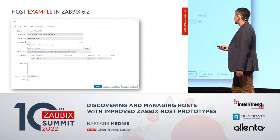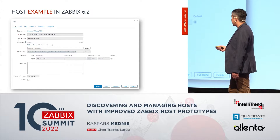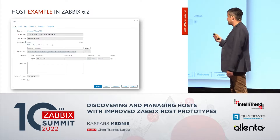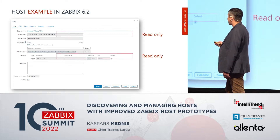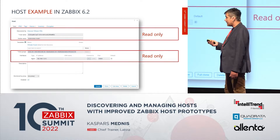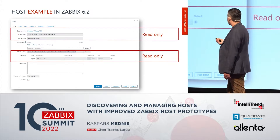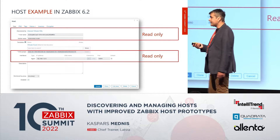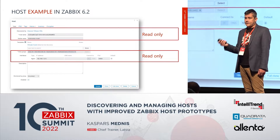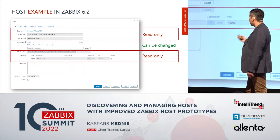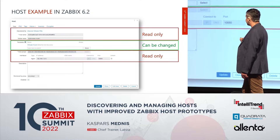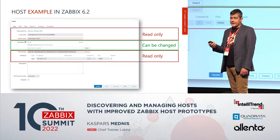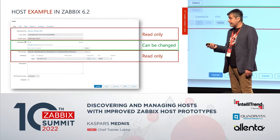Here is an example in Zabbix 6.2 — this is a host created automatically by Zabbix from the host prototype. You can see that most of the fields are read-only because this is how they are defined in the prototype. But what's new — this field is not grayed out, which means you can assign a template manually, for example.